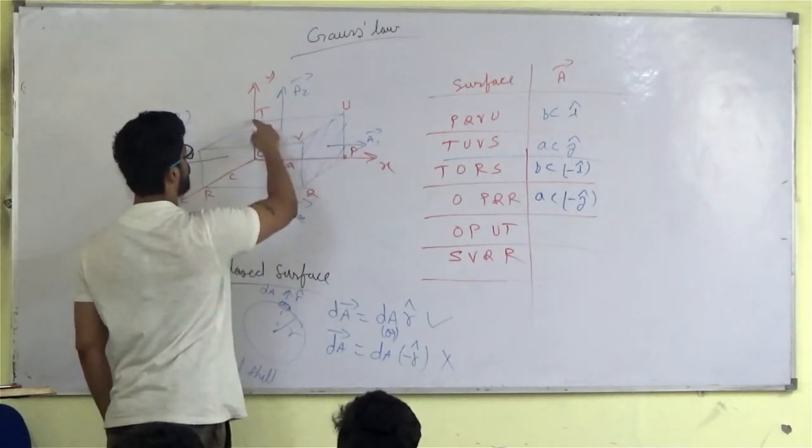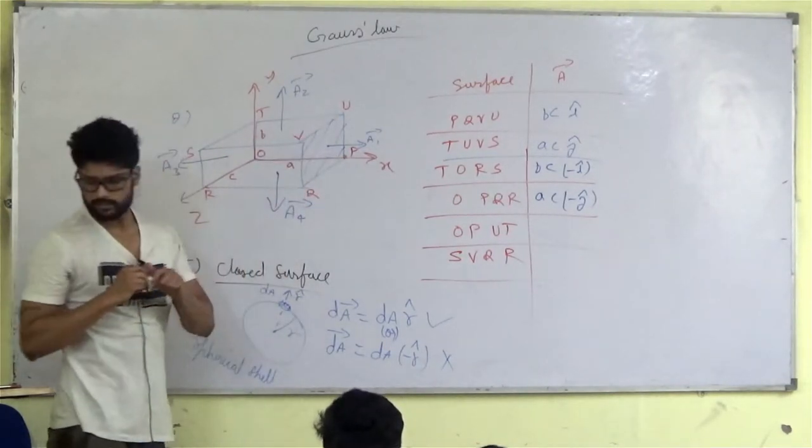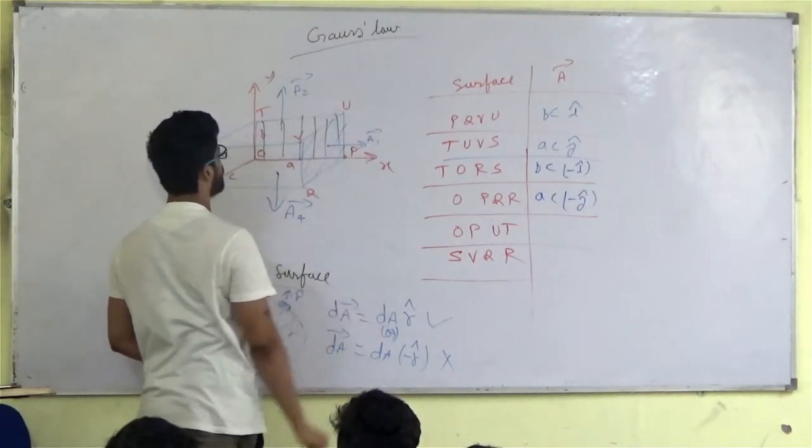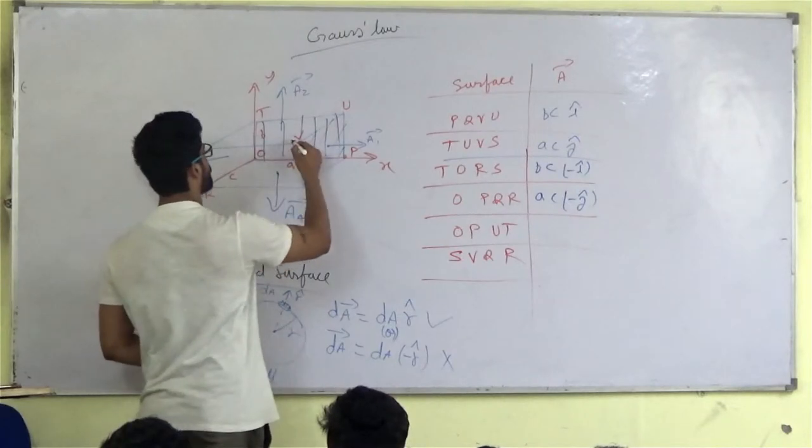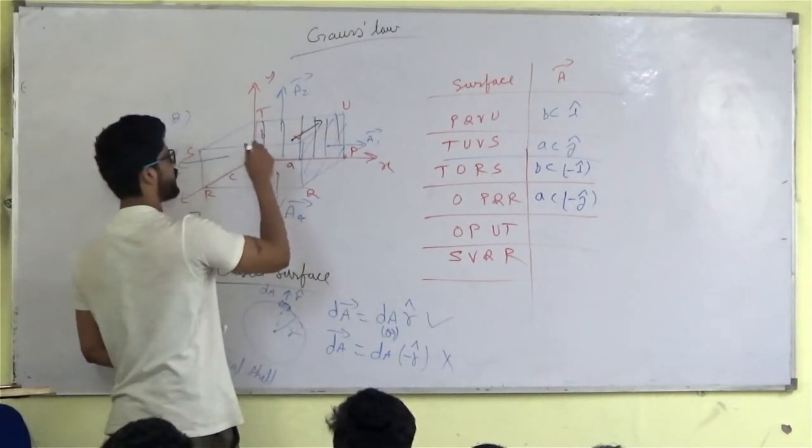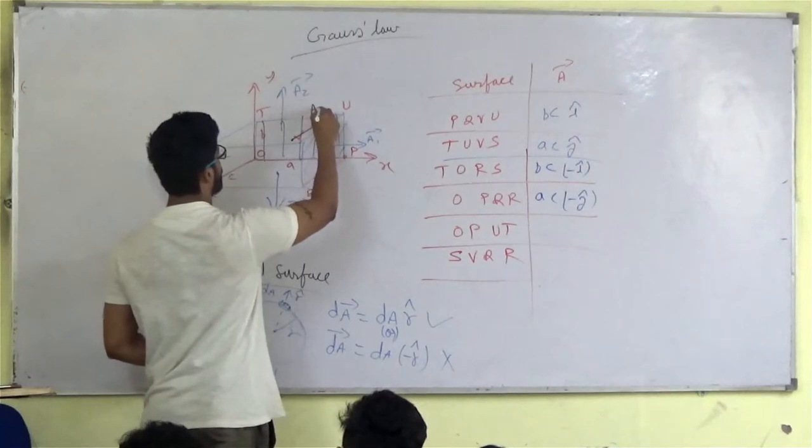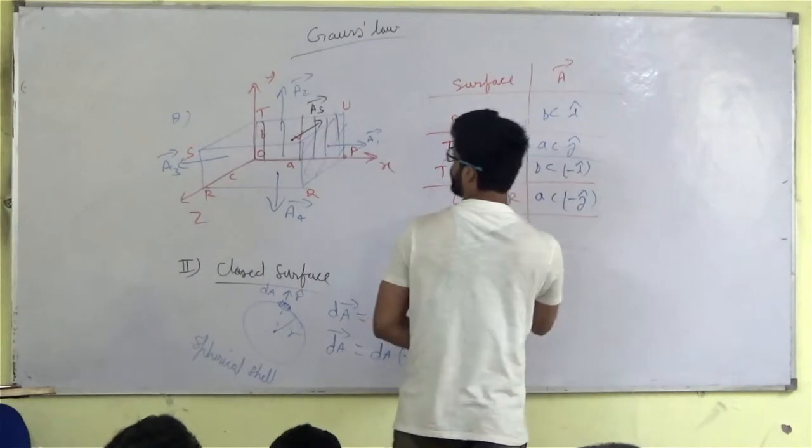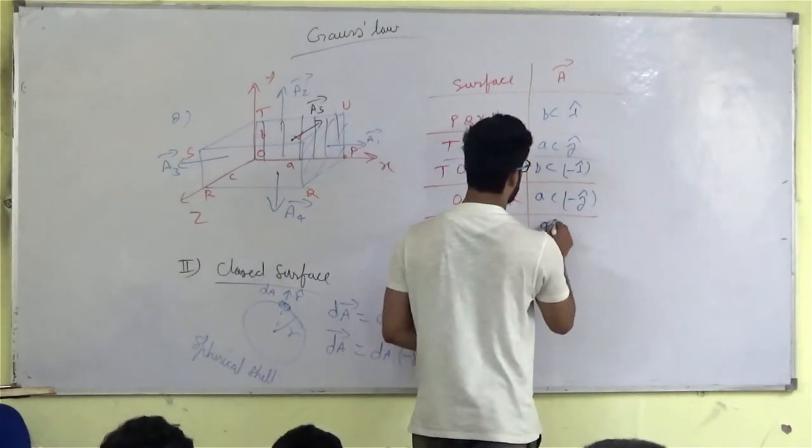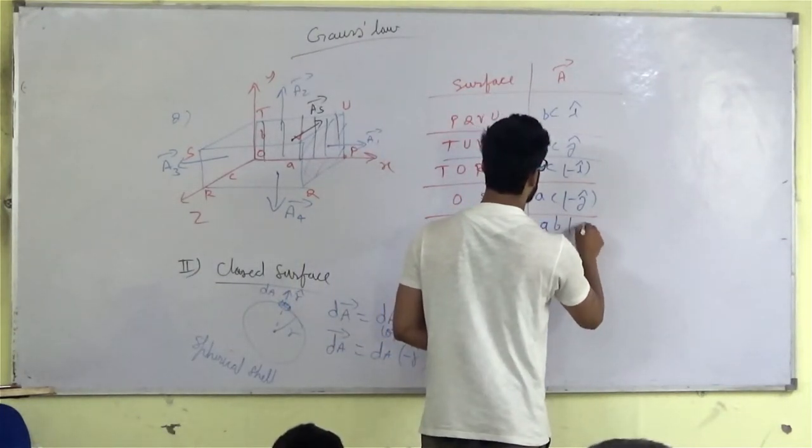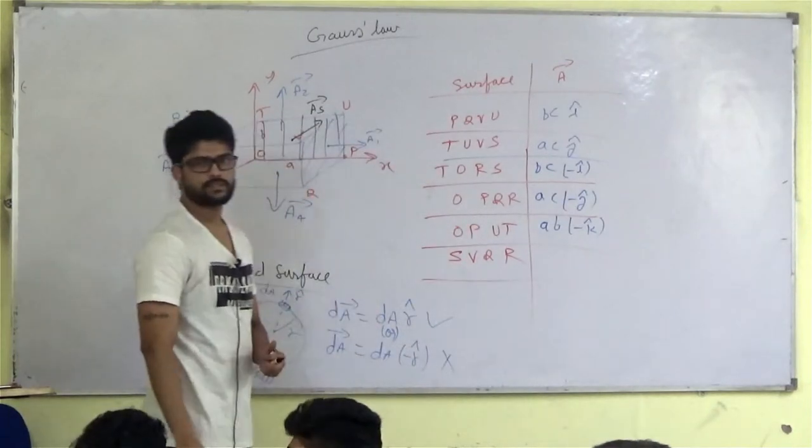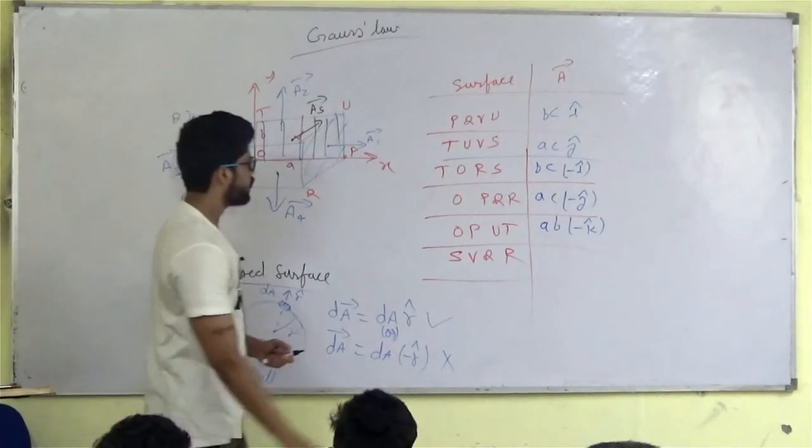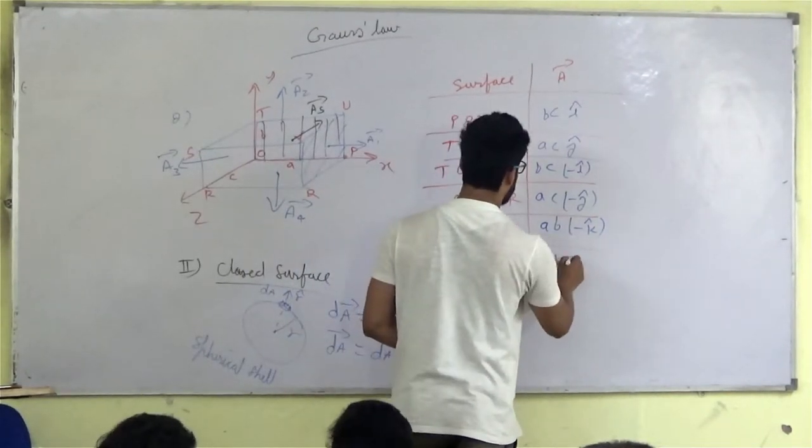Let's write O, P, U, T. This is the one. O, P, U, T. Let me tell you, how will it go? This is the one. It will go out. So how much is it? The area is A into B, A into B minus K cap. And what will it go out? Again, it is the opposite. A, B, K cap.